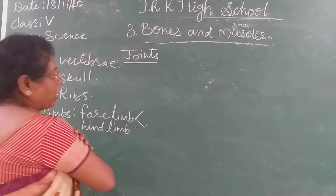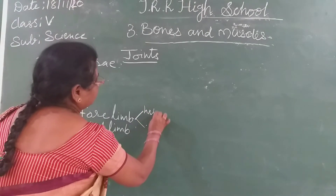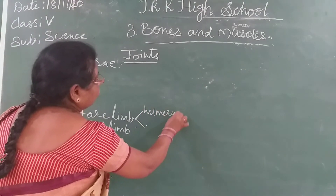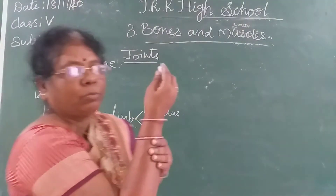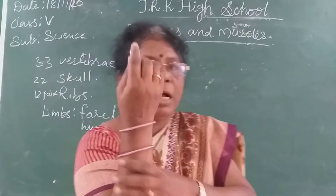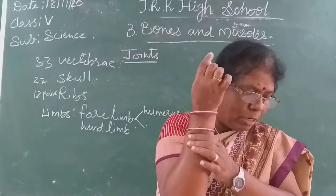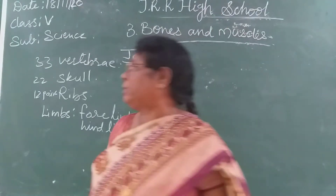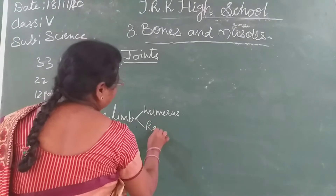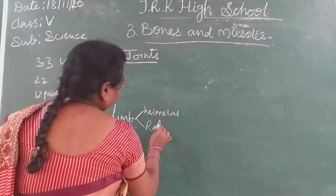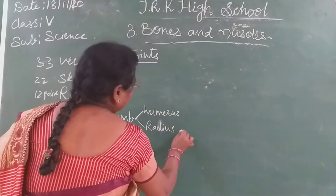In the forelimbs, the front part of the arm is called humerus. The lower part of the arm has 2 bones: they are called radius and ulna.